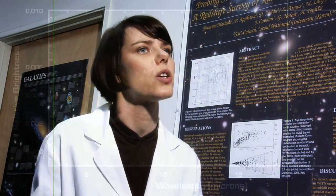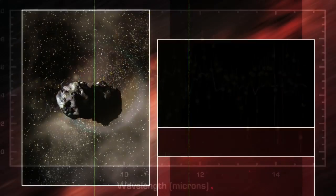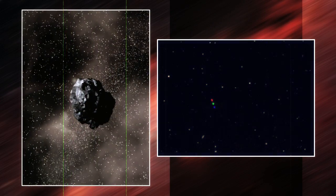You can't just let Spitzer die. I mean, it was the first telescope to ever detect light directly from a planet outside our solar system. It spots asteroids that might impact the Earth. It finds galaxies, star-forming regions.